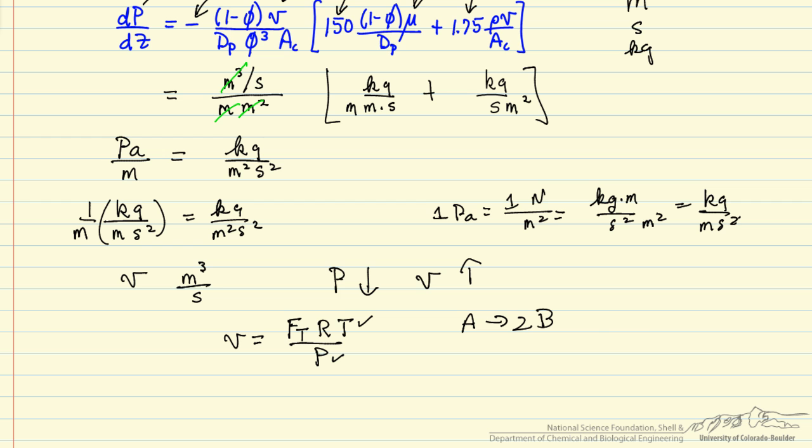So, for example, A goes to 2B means for every mole that A reacts, we get two moles of B, so we're increasing the volumetric flow rate.